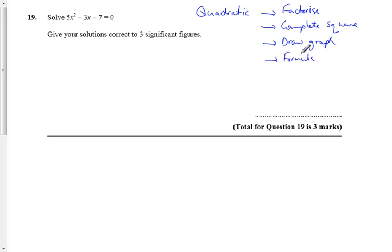Now the formula is at the front of the book. The hint that we need to use the formula is the fact that it asks for three significant figures. So we know we're going to have to use our calculators, and this method often uses our calculator to do it.